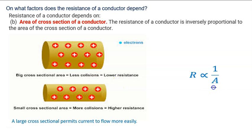Increasing the area means resistance is decreasing. A small cross-section area means more collision, and more collision means higher resistance.